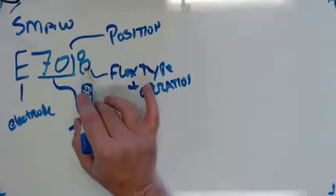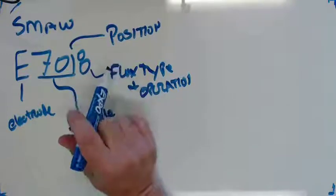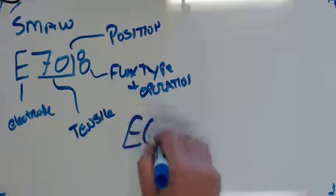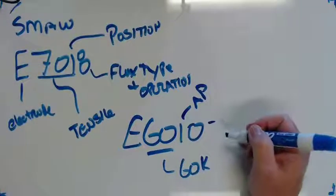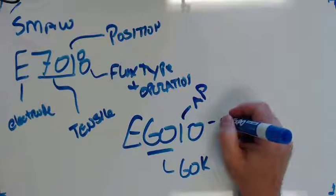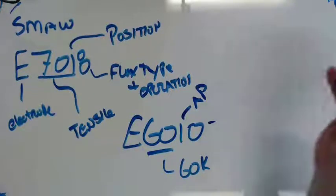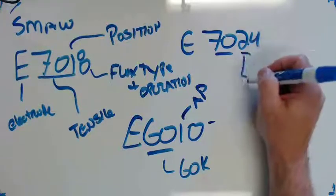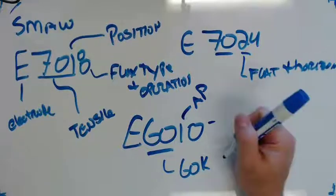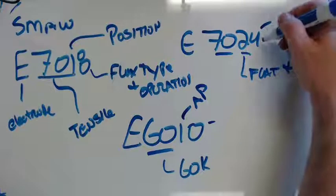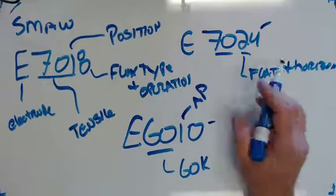E6010 - what's the tensile? 60,000 tensile, so it's less strong, but it is all position. The zero tells you it is a rutile or cellulose flux. Something like 7024 is also 70 tensile. This two means it is flat and horizontal only. The four is the flux type - it is not low hydrogen. If it's low hydrogen it's only five, six, and eight. It's not low hydrogen, but the four tells us there's a ton of iron in the flux. That's how we decode stick electrode designators.